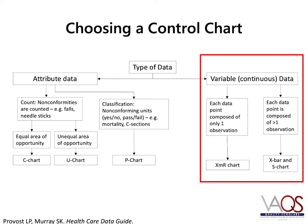The choice between the XMR chart or X bar and S chart depends on the number of observations that you have for each data point. For the XMR chart, there is only one observation per data point. For the X bar and S chart, there are more than one observations per data point. Imagine you are working on a project to reduce the amount of time admitted patients spend waiting in the emergency room for an inpatient bed to become available. You have multiple patients admitted to the hospital through the emergency room each day. You could look at the wait time for sequential patients and have each data point be a single observation from one patient. In this case, you would use an XMR chart to analyze the data.